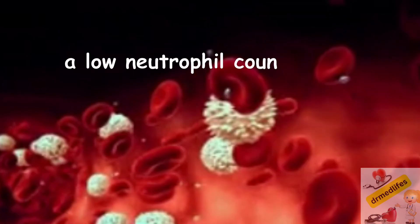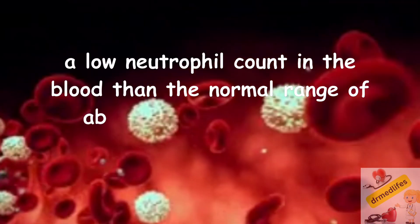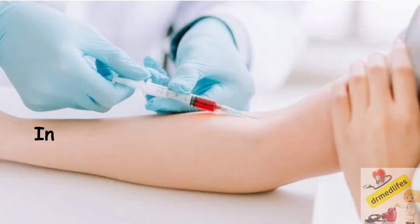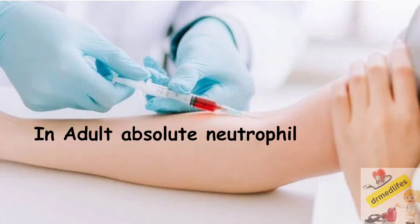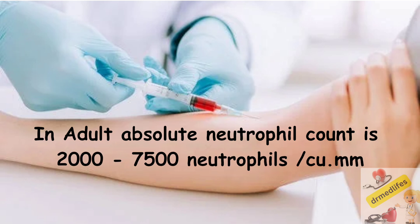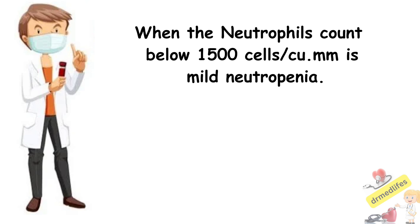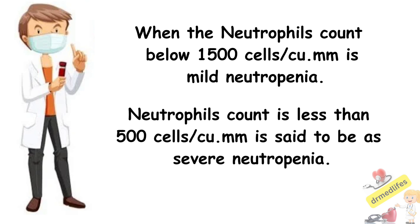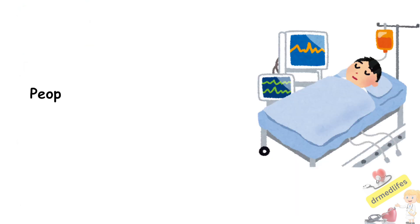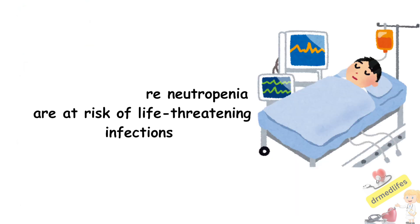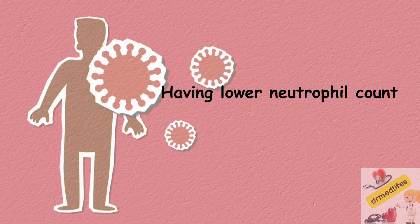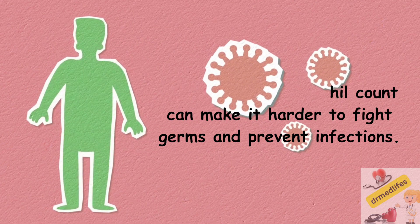Neutropenia is defined as a low neutrophil count in the blood, below the normal range of absolute neutrophil count. In adults, the absolute neutrophil count ranges between 2000 to 7500 neutrophils per cubic millimeter. A neutrophil count below 1500 cells per cubic millimeter is mild neutropenia, and less than 500 cells per cubic millimeter is severe neutropenia. People with severe neutropenia are at risk of life-threatening infections, as a lower neutrophil count makes it harder to fight germs and prevent infections.